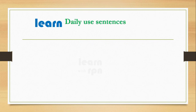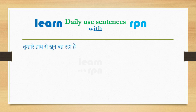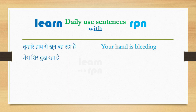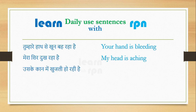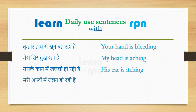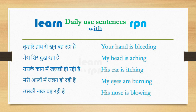Now let's go to the next section for daily use sentences. Please say: His ear is itching. In these sentences, you can change as per the situation. Here are a couple more daily use sentences: Meri aankhon mein jalan ho rahi hai — My eyes are burning. Uski naak beh rahi hai — His nose is running.